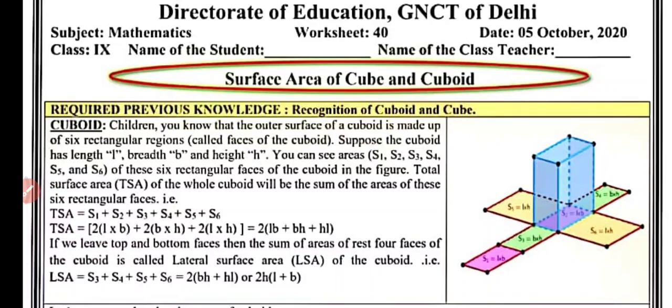Welcome to my YouTube channel and CRT Math. Today in this video we will do worksheet number 40 for class 9, subject mathematics. Our topic is surface area of cube and cuboid. We have already discussed the basic introduction of cube and cuboid in the previous video, worksheet 39. You can watch that video from the playlist.